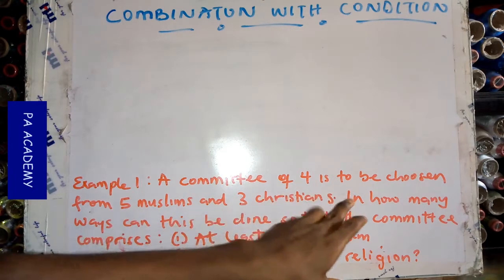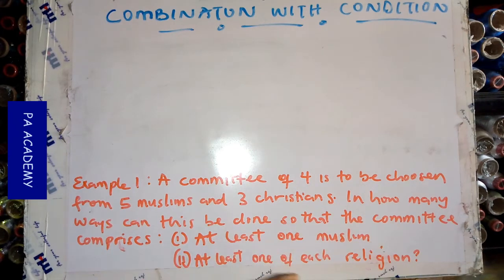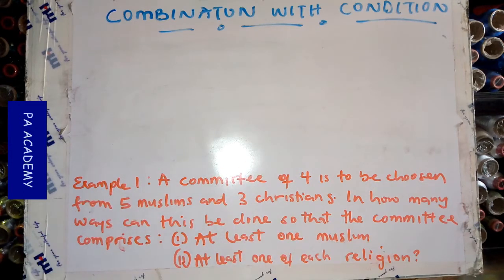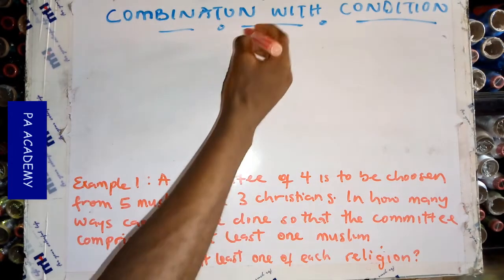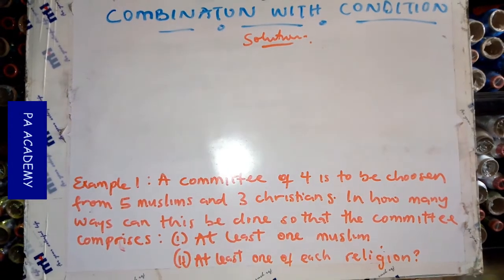This example says: a committee of four is to be chosen from five Muslims and three Christians. In how many ways can this be done so that the committee comprises of — and now these are the conditions — at least one Muslim, and at least one of each religion. Unlike combination without condition where questions are straightforward, here we are given these two conditions. Let's see how to solve questions like this.